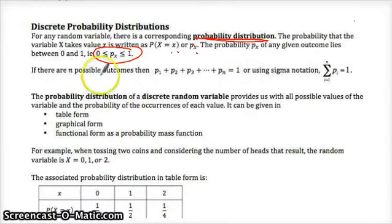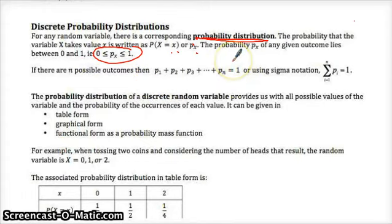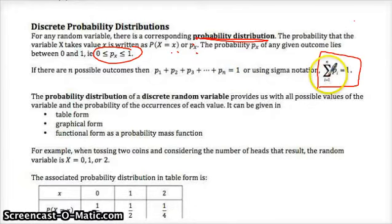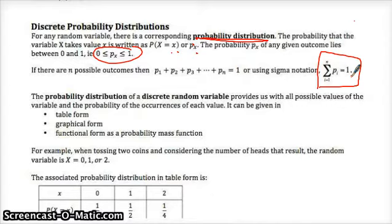So if there are n possible outcomes, then all those probabilities should add up to one. The probability that you flip zero heads, or one head, or two heads — those three probabilities should have a sum of one. Sigma notation is just a summation sign; it means we're taking the sum of the first probability all the way to the nth probability, and if we added those all up, we should get a total of one.